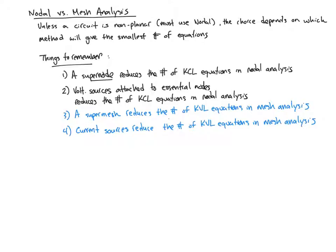So a couple things to remember. A supernode reduces KCLs in nodal analysis, like a supermesh reduces KVLs in mesh analysis. Any time you see voltage sources, especially those attached to essential nodes, you reduce the number of KCLs in nodal analysis. Current sources reduce the number of KVLs in mesh analysis. So in general, we're going to follow a procedure to figure this out, and you'll get better at this, but you should try to do this each time you encounter a problem.